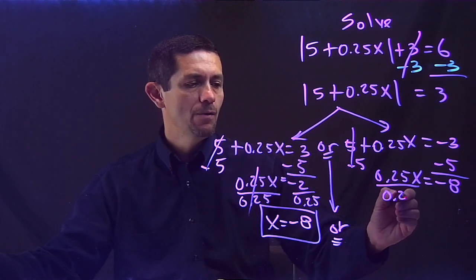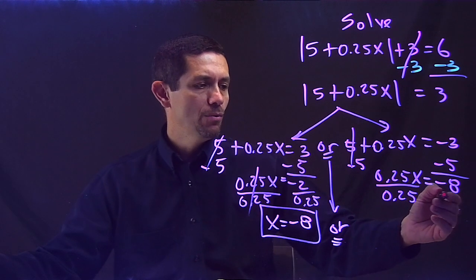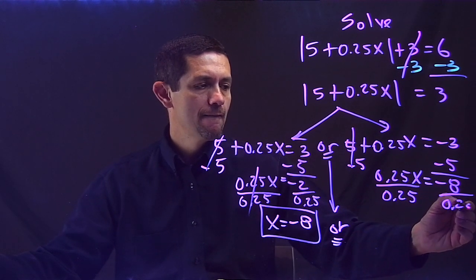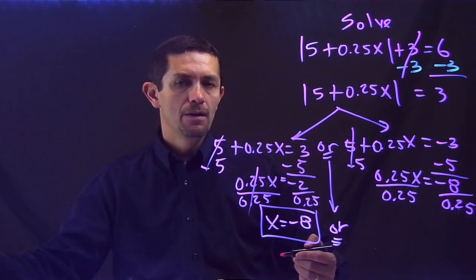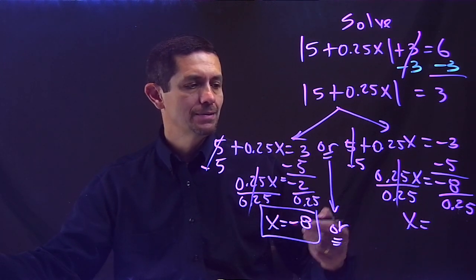My last step is divided by whatever is with the x. Same number, same sign on both sides. 0.25 divided by 0.25, cancel out, and I have x equals.